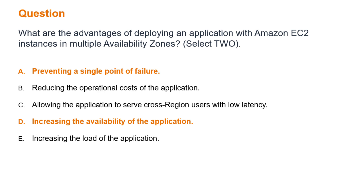The other options are incorrect. For Option B, multiple availability zones will not directly reduce the operational costs of your application. The main benefit is the increased availability and resilience of your application.